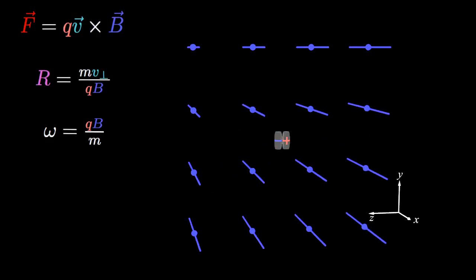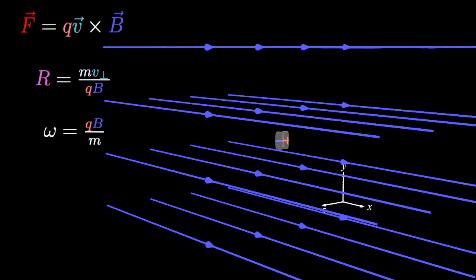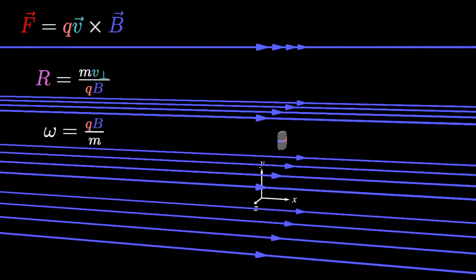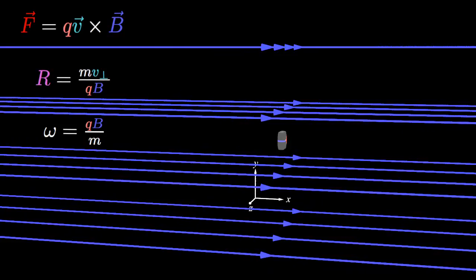Returning to the more general 3D case, the net motion of the charges will be determined by the parallel and perpendicular components of the charge velocity relative to the magnetic field.